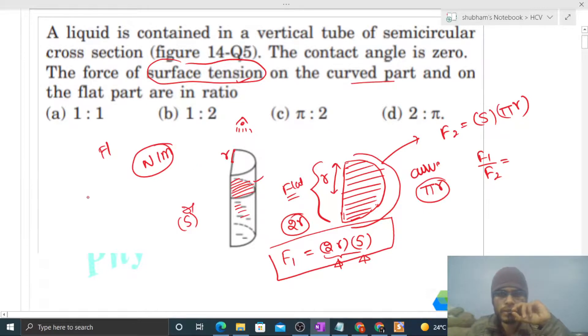So we have to find out F2 by F1, right? So F2 will be πrS divided by 2rS. So from here rS will cancel out, giving us the ratio π/2. So option C is correct.